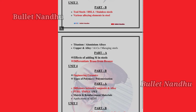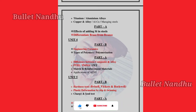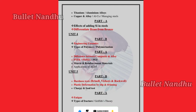Unit 4 will cover engineering ceramics in Part B. You can see the types of polymers. The difference between composite and alloy is very important. We also cover PTFE, PMMA, and PAT, as well as matrix and reinforcement materials.